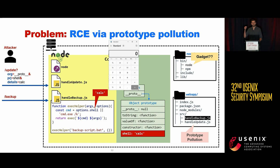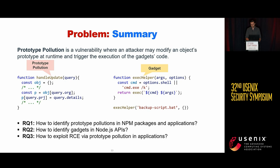This code fragment is called a prototype pollution gadget. If you find a gadget in the code of Node.js itself, the impact is much higher because it potentially affects all applications. To achieve remote code execution, we need two steps: identifying prototype pollution and identifying gadgets.